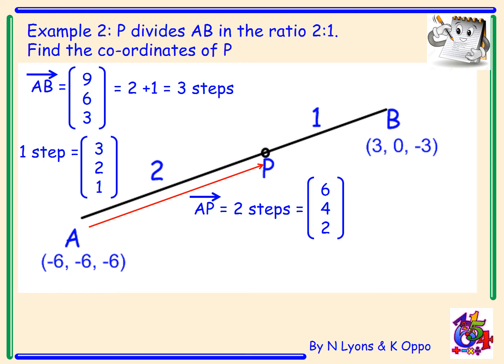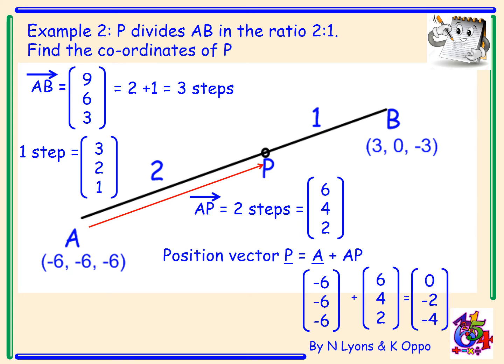Now, I don't want to find the vector AP. I want to find the coordinates of the point P. So point P equals, if I start at A, and I add on the vector AP. So A was the point (-6, -6, -6). Add on the vector (6, 4, 2). And that gives me the position vector of P equals (0, -2, -4). But the question asked me for the coordinates of the point P. So I just simply take my vector and write it in coordinate form. So the coordinates of P are (0, -2, -4).